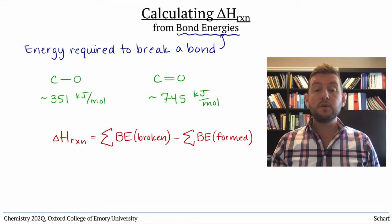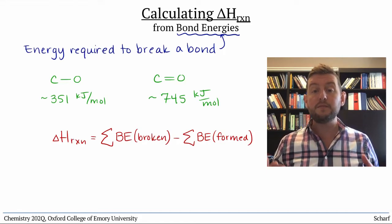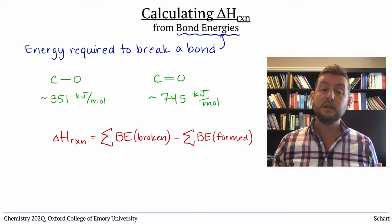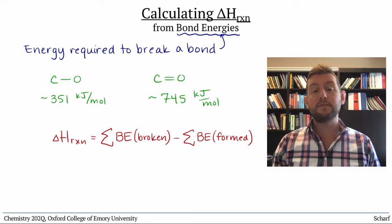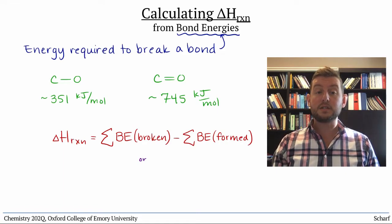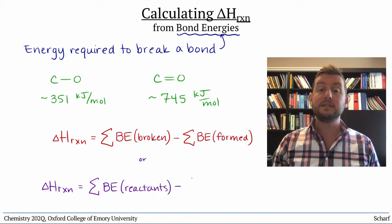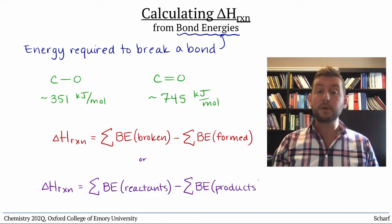We can use this approach even if we aren't completely sure which specific bonds are made and broken, provided we know the structures of the reactants and products. The reaction enthalpy is just the sum of the bond energies of the reactants minus the sum of the bond energies of the products.